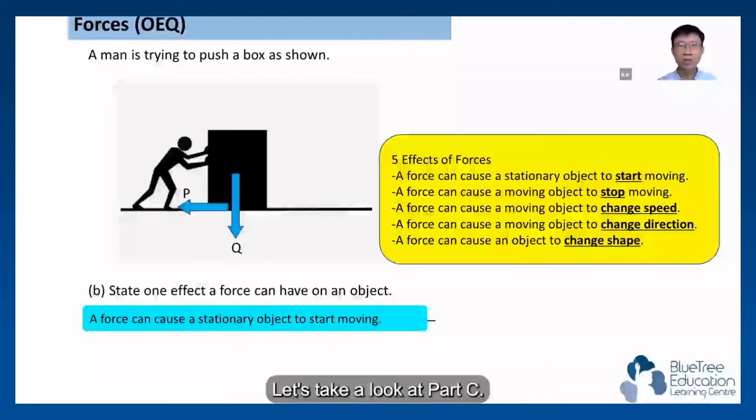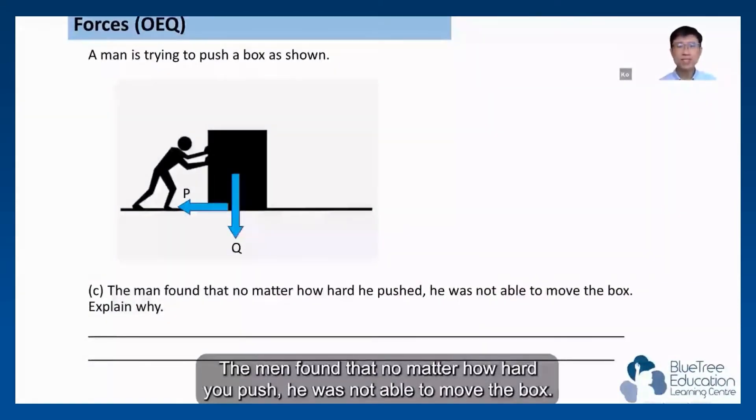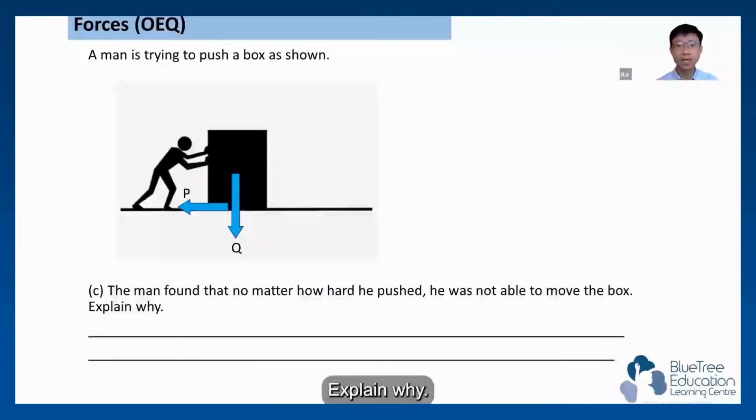Let's take a look at part C. The man found that no matter how hard he pushed, he was not able to move the box. Explain why. Why is he not able to push the box?